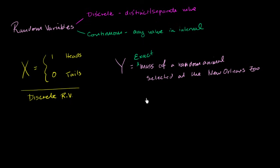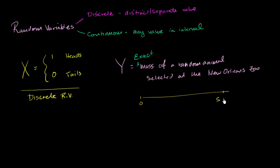That mass, for example at the zoo, might take on a value anywhere between close to zero — there's no animal with zero mass, but it could be close to zero for an ant or a dust mite or even a bacterium — all the way up to maybe 3,000 or 5,000 kilograms for a very massive elephant. Any animal could have a mass anywhere in between. It does not take on discrete values. You could have an animal that is exactly 123.75921 kilograms.